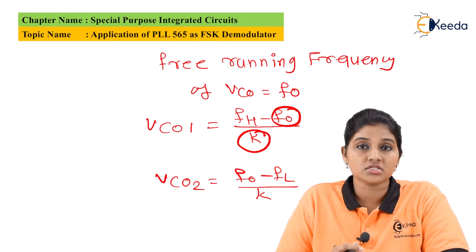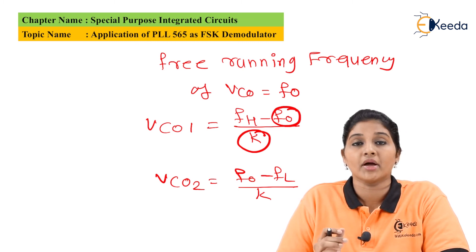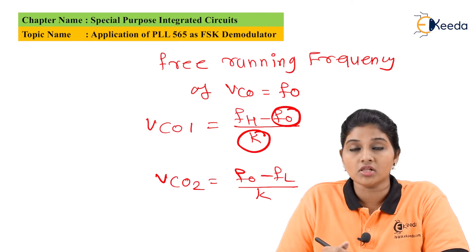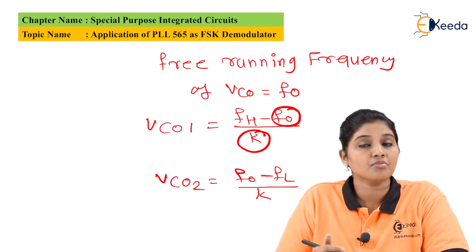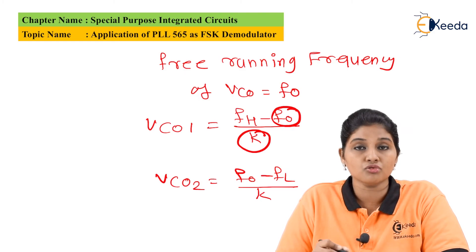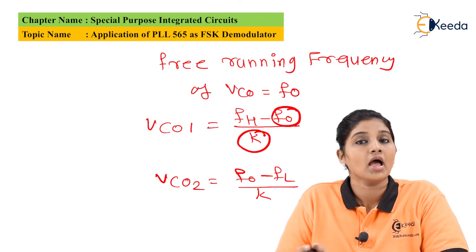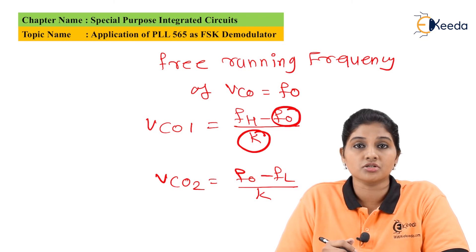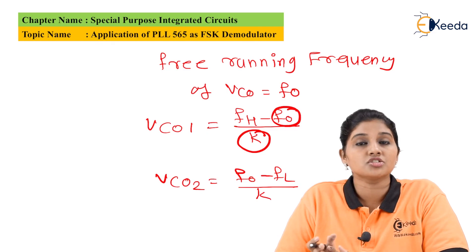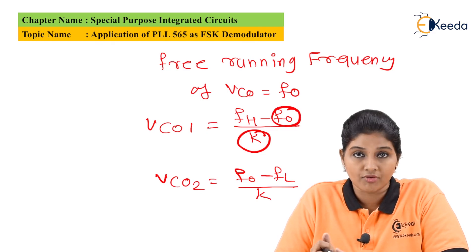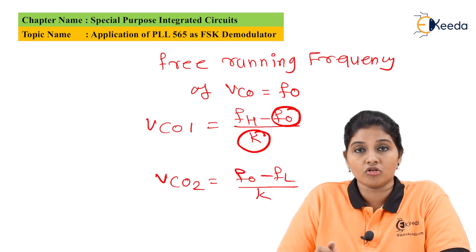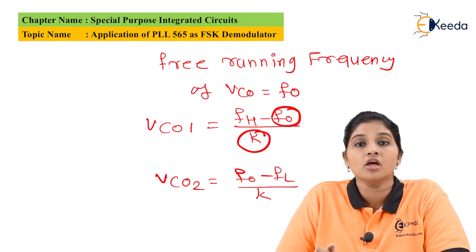This is how the FSK signal is demodulated. By tracking the input frequency between FH and FL, the VCO produces two control voltages VCO1 and VCO2, which are compared with the reference voltage to obtain the digital signal at the output. This is how the FSK signal is demodulated by using PLL IC565. I hope you understand FSK demodulation by using IC565. Thank you very much for watching this video.